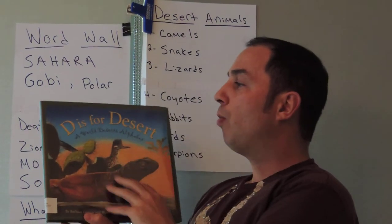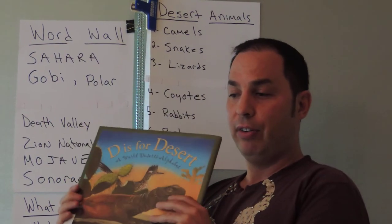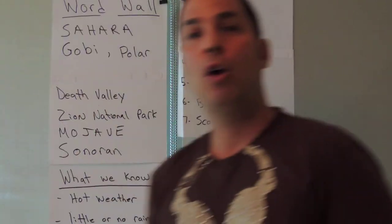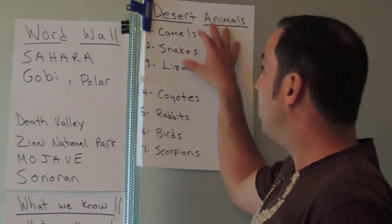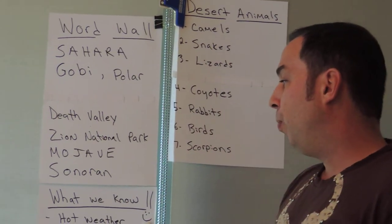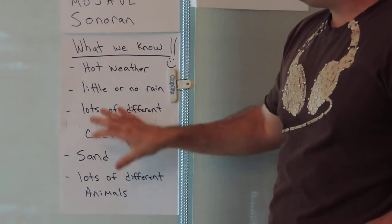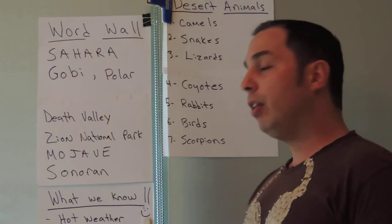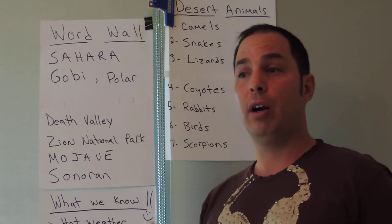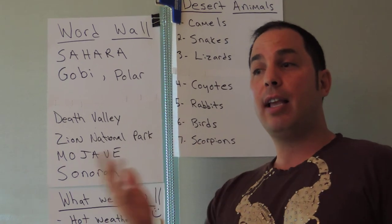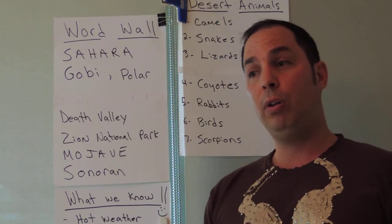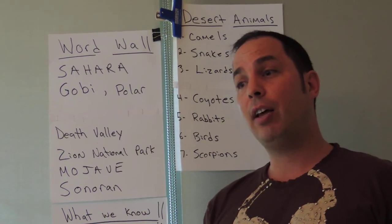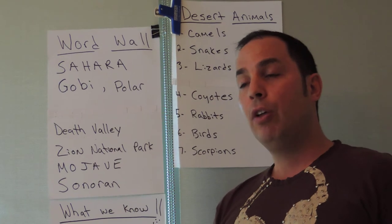That concludes our read aloud, 'D is for Desert.' Now let me ask you a few questions — what do we know about the desert now that we didn't know before? The temperatures in polar deserts are cold — that was something we didn't know. There are also many different kinds of animals in deserts.